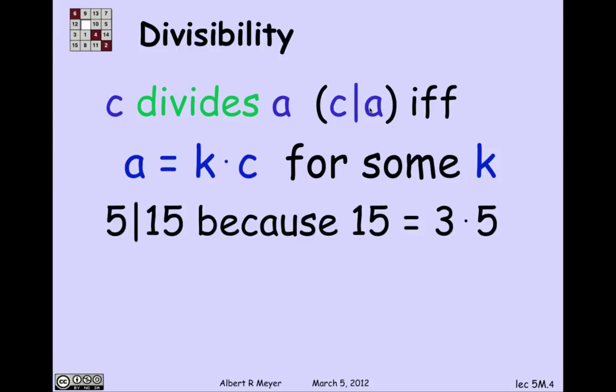OK, let's just practice this. So 5 divides 15, because 15 is 3 times 5. A number n divides 0. Every number n divides 0. Even 0 divides 0 because 0 equals 0 times n. So 0 is a multiple of every number.